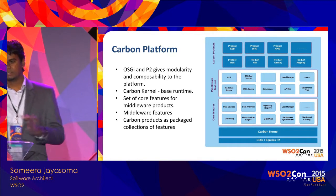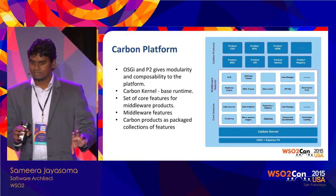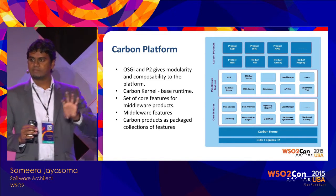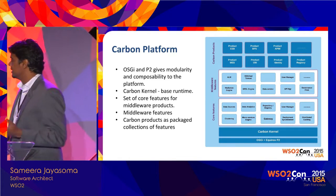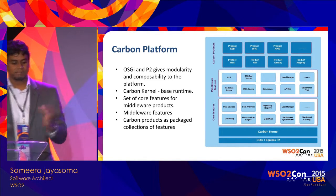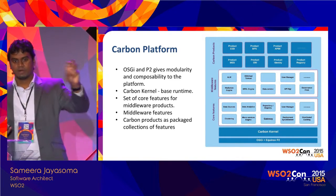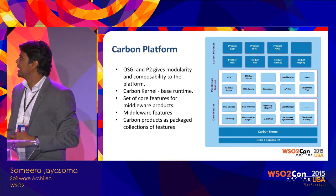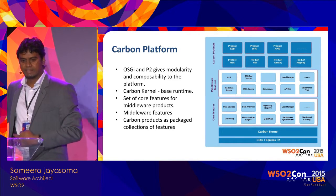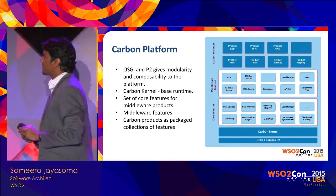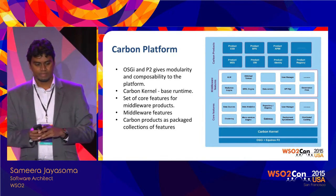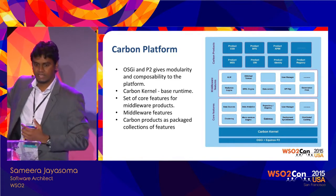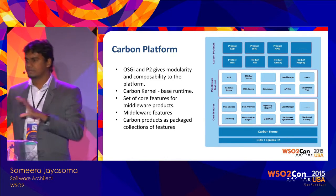We have a set of core features including user management, lightweight repository, data sources, data analytics engines, deployment synchronization, and distributed caching. On top of these are middleware features such as mediation engine, BPEL, and data services. We then merge subsets of these middleware features to form a product. You can see products like ESB, BPS, Identity, and MSS. The Hamming platform essentially refers to this combination of the core features, kernel, and product layers.